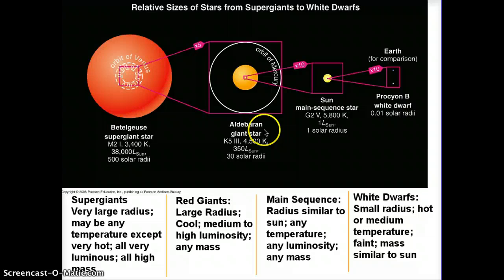Supergiants and red giants maybe go out to the size of orbits of planets. Main sequence stars are about the size of the sun. White dwarfs are the same size as Earth in terms of radius. But these things also had some other things in common that we could see from the HR diagram.